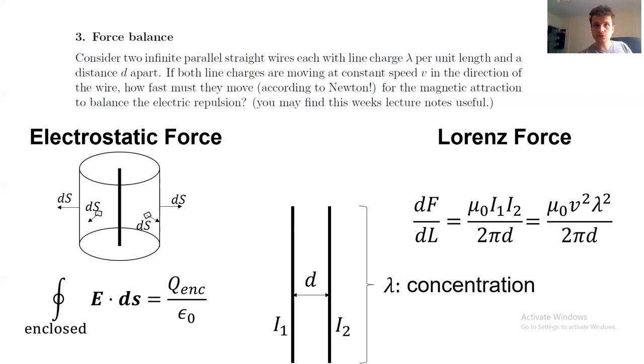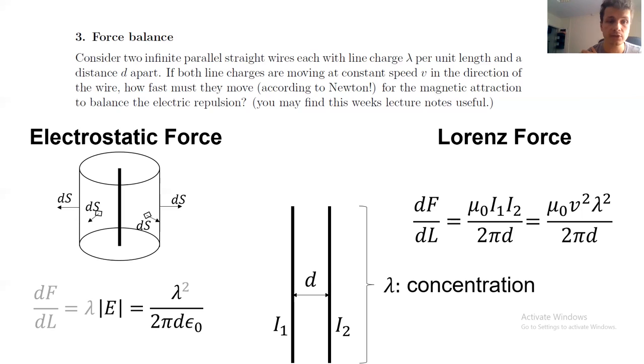And therefore, the enclosed charge is going to be given by this integration. And the electric field is going to be lambda divided by 2 pi d epsilon naught. But remember, here we need the force exerted by one over the other. So we actually need to multiply by the other lambda, which gives this solution.